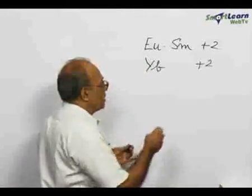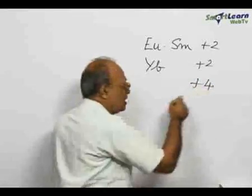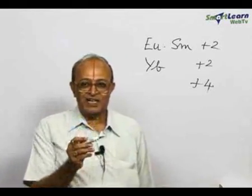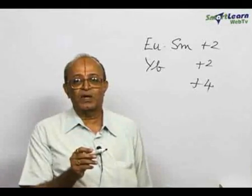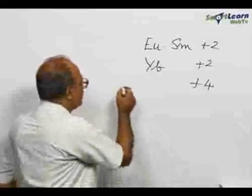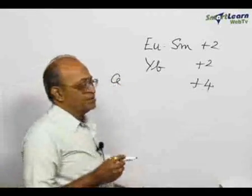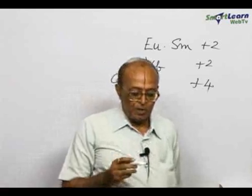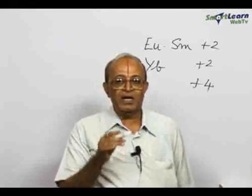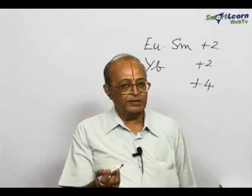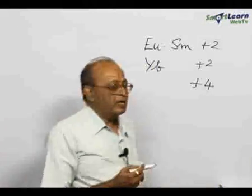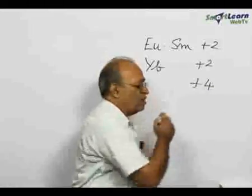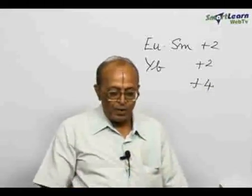Higher oxidation states are also possible in the case of lanthanides. The first element lanthanum is followed by cerium. The element coming after lanthanum — cerium — and similarly the element following gadolinium, these are capable of forming compounds in the plus 4 oxidation state.